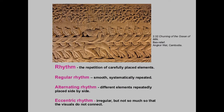Now rhythm is a different concept — you want to think about it in terms of repetition. If you don't have repetition, you probably don't have rhythm. Different elements repeatedly placed side by side create rhythm. Eccentric rhythm is irregular, but not so much that the visuals do not connect.